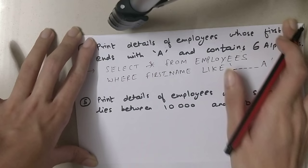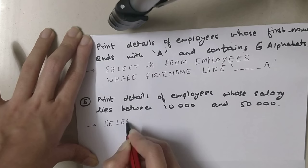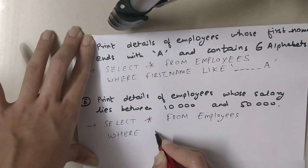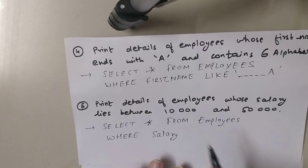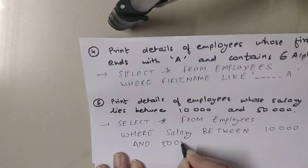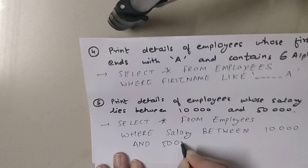The last query is: print details of employees whose salary lies between 10,000 and 50,000. We write SELECT * FROM employees WHERE salary BETWEEN 10000 AND 50000. We use BETWEEN when we have a lower limit and an upper limit. These are the five queries for this video — thank you for watching.